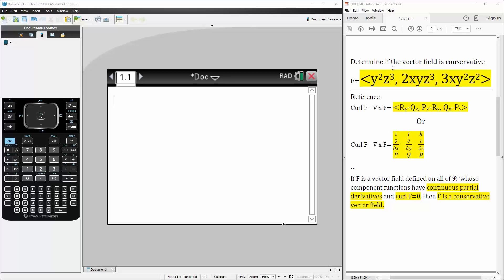Okay, in this problem we want to determine if the vector field is conservative. Our vector field is y² times z³ comma 2xyz³ comma 3xy²z². If we have continuous partial derivatives and our curl f is 0, then f is a conservative vector field.